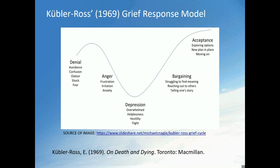Kubler-Ross' 1969 grief response model, which was originally developed to explain responses to terminal illness, has been commonly used in early psychology of sport injury research. The model is comprised of five stages: denial, anger, depression, bargaining, and acceptance. It is suggested that following injury all athletes regress through each of the five stages in order.